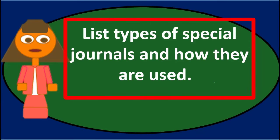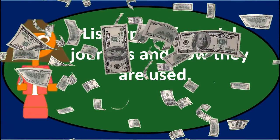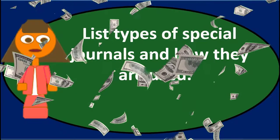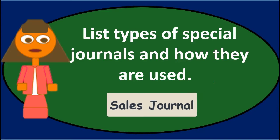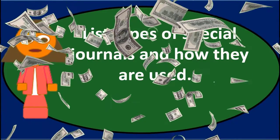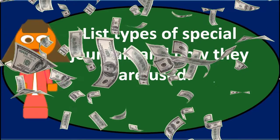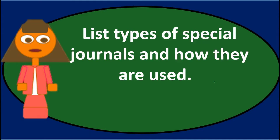Those are some of the most common types of special journals. The names can be a little deceiving. For example, you would think that anything dealing with sales would go in the sales journal, but sales for cash would not go in the sales journal — because we would be receiving cash at that point, and therefore it would go into the cash receipts journal. That's one of the main sources of confusion when talking about these types of journals.